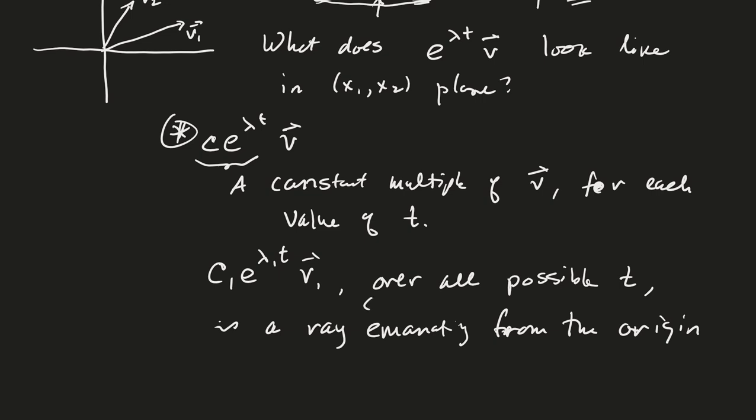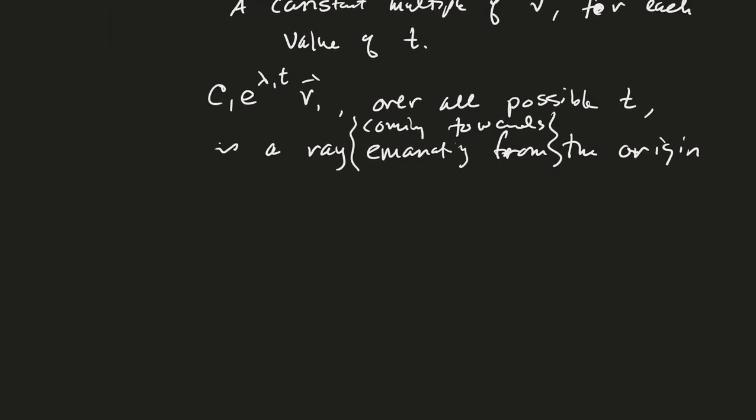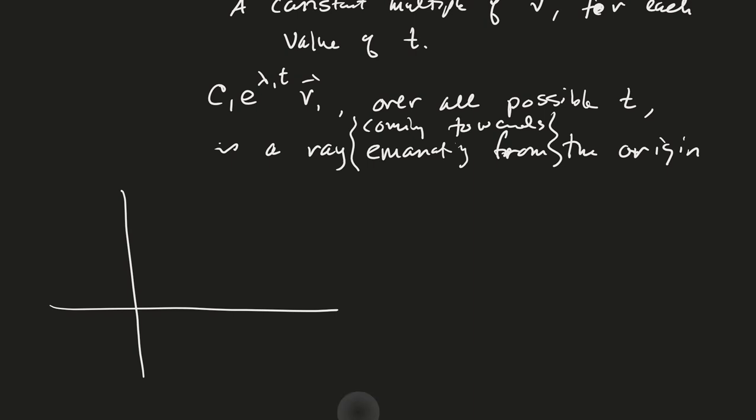Well, I guess the vector could be coming into the origin or away from the origin. It could be coming towards, coming towards, so it could be either way, the origin. Okay, so let me draw that. If this is my vector V1, and if I assume that C1 is greater than zero and lambda one is less than zero, right, then what's going to happen if I fix these values, then this quantity, if I change time, is going to go towards the origin, right?